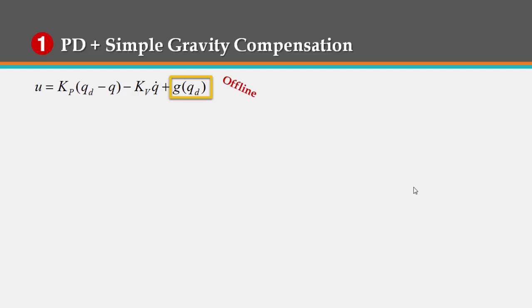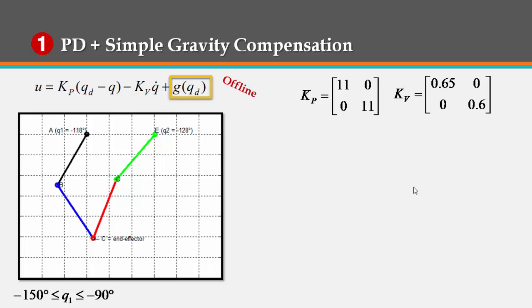And we selected kp and kv to be positive diagonal matrices with the following elements, which are selected to take the system close to critically damped.